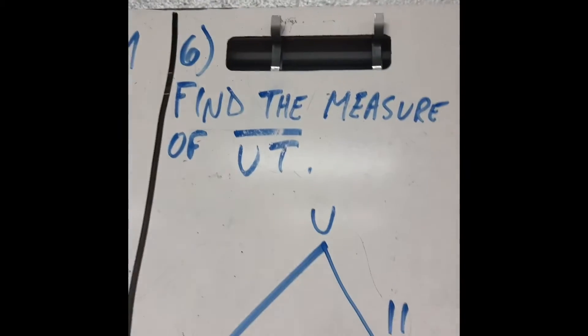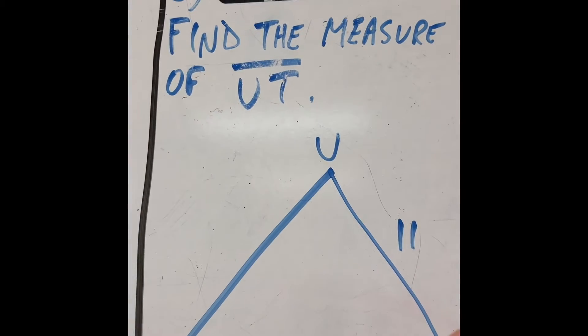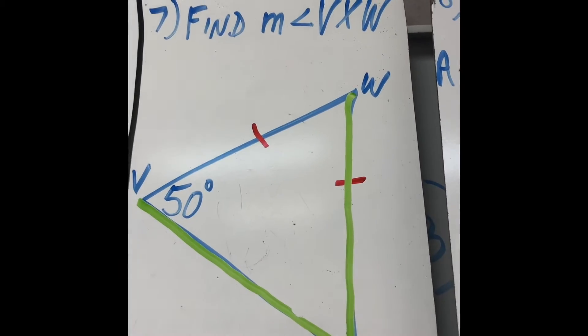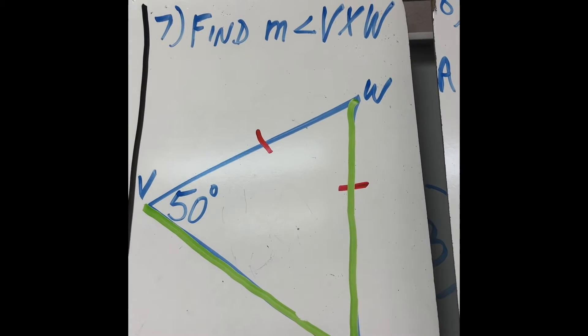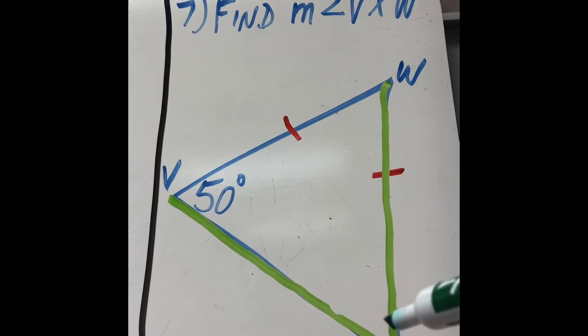Over here, find the measure of UT. Don't let this guy throw you off. If this is 11, this is 11. Done. Again, find angle W, I'm sorry, VXW. That's this angle here. Don't let anything throw you off. If this is 50, this is 50. Done.